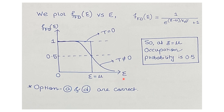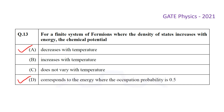From the plot, the occupation probability at energy E equal to the chemical potential μ is clearly 0.5. This can also be calculated directly: at E = μ, the exponential term e^((E−μ)/k_BT) = e^0 = 1, so f = 1/(1+1) = 1/2 = 0.5. Therefore option D is also correct. For this multiple select question, options A and D are the correct answers.